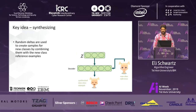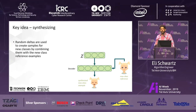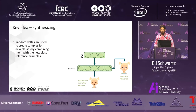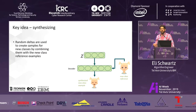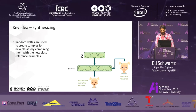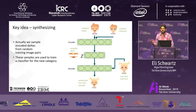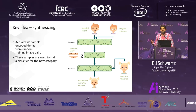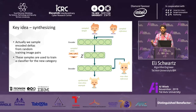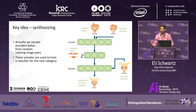At test time, we sample random deltas and use the decoder to apply them to a reference image from a novel category. By repeating this process many times, we generate many new samples for the novel category. Actually, we are not using purely random deltas — we sample random pairs of images belonging to the same training set category and extract from them the random deltas. This way, we make sure the deltas we are using are more valid ones, not just random.